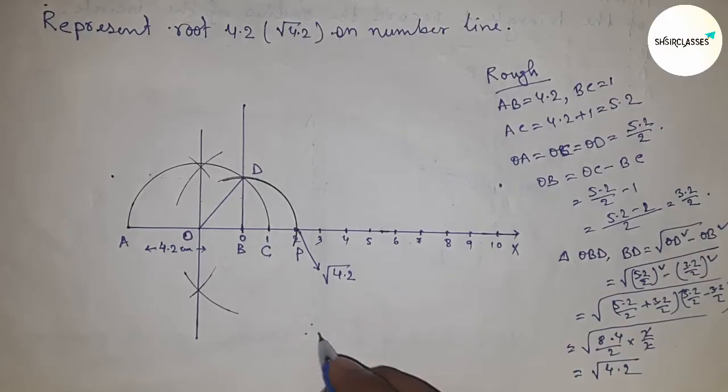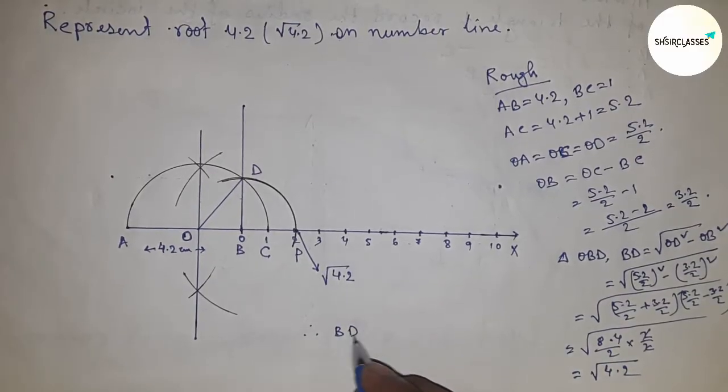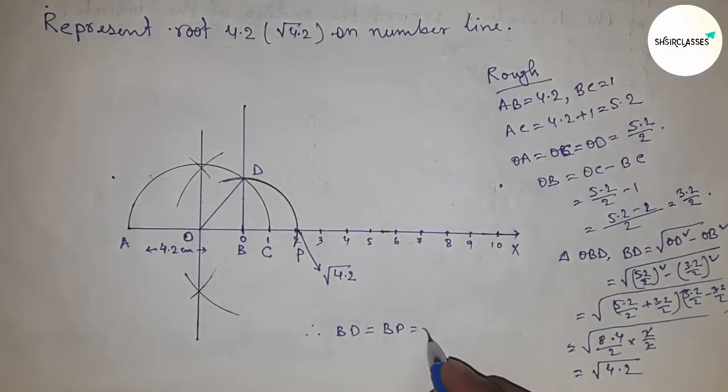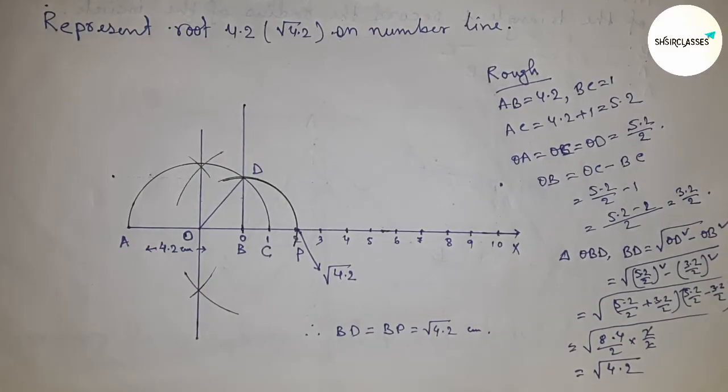Therefore, BD equals BP equals square root of 4.2. Thanks, please subscribe, like, and comment.